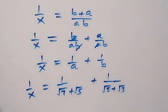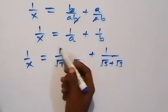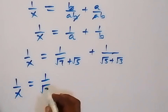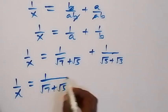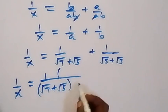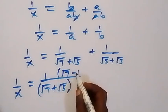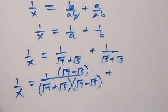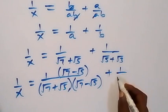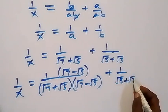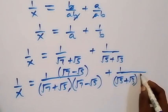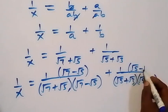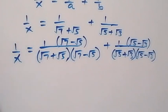In the next step, we have fractions with square roots which means we can rationalize each of them. So 1 over x equals 1 over (root 7 plus root 5). When we rationalize this, we multiply numerator and denominator by the conjugate, which is root 7 minus root 5, divided by root 7 minus root 5. Then similarly, we rationalize 1 over (root 5 plus root 3) and multiply by the conjugate root 5 minus root 3, divided by root 5 minus root 3.